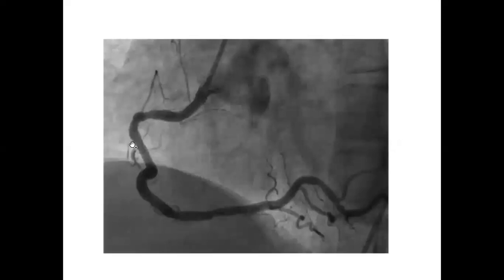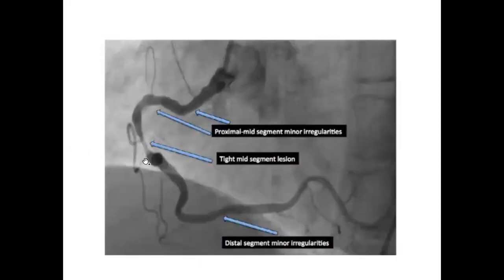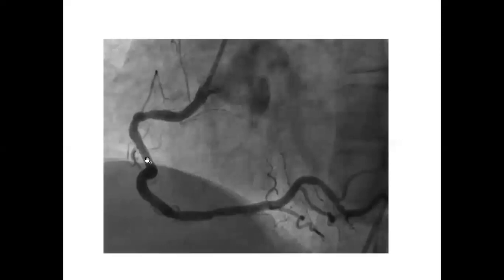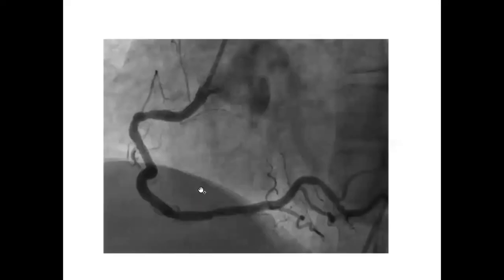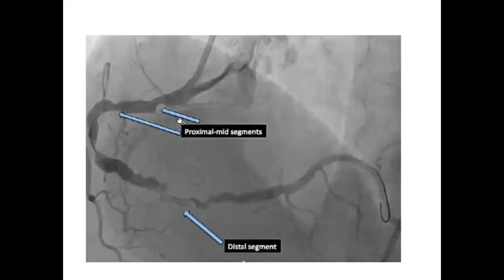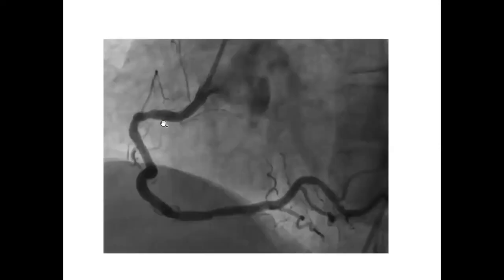A stent was placed in the mid segment where the true lesion was. After placing the stent and removing the wire, you can see that the concertina effect — the irregularities in the proximal and distal segments — disappeared automatically. You should be aware of this effect, because you may assume those are lesions and treat them with a stent, which is not actually required.